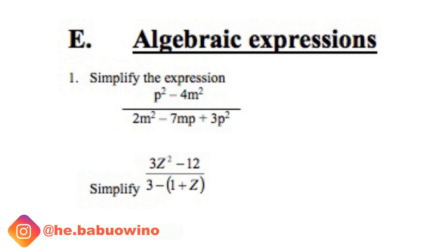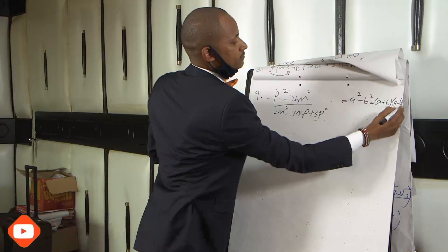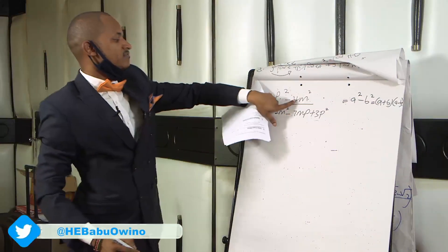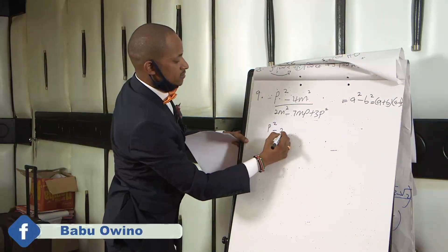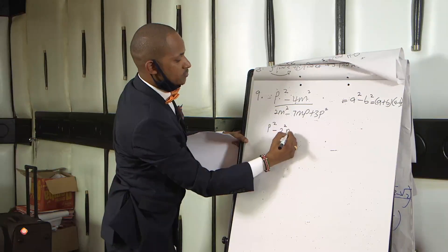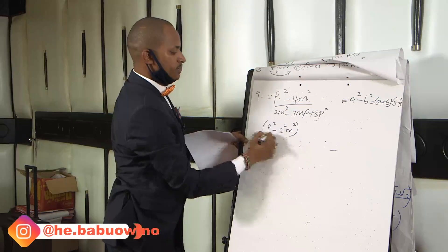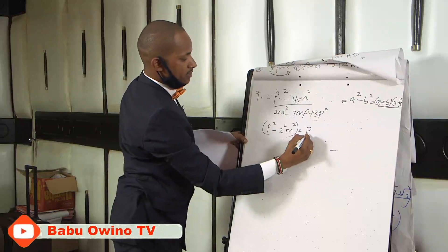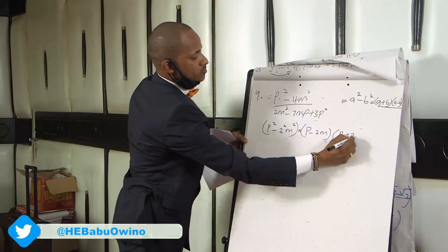A difference of two squares means a squared minus b squared, which can be written as a plus b into a minus b. Therefore, p squared minus 4m squared — you can see that 4 can be written as 2 raised to power 2, and m raised to power 2. So when you simplify this with the difference of two squares, you just write p minus 2m into p plus 2m.